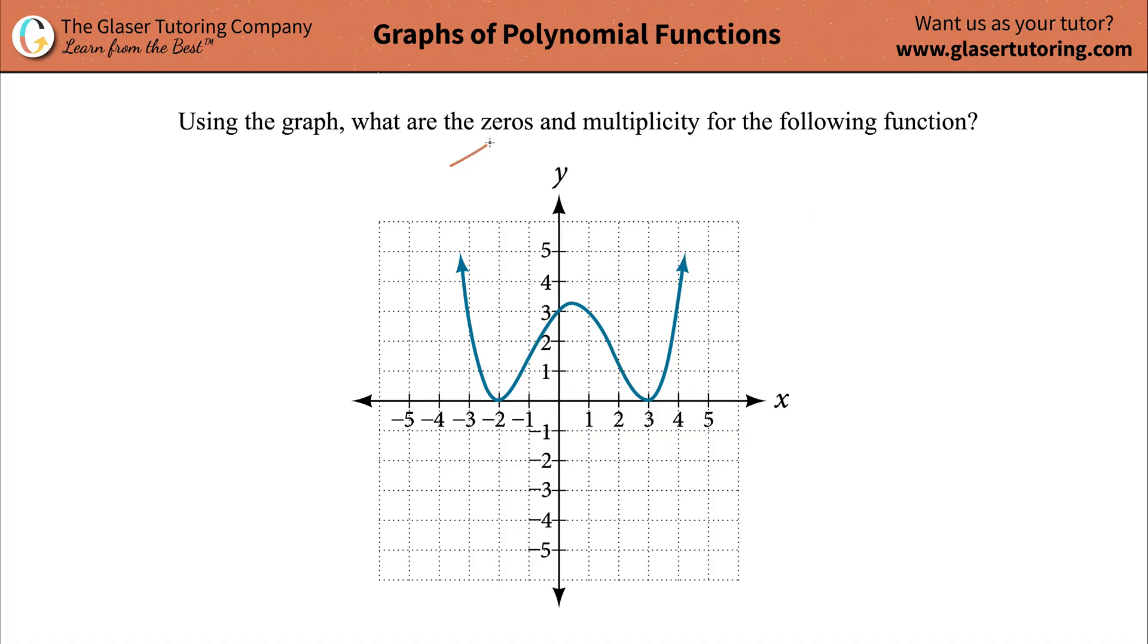So the first thing is, what are zeros? Is zero just zero? Well, not exactly. Zeros mean the x-intercept values. And remember the x-intercept is going to be the locations, the x-values, where the graph touches the x-axis or intersects completely and crosses that x-axis.